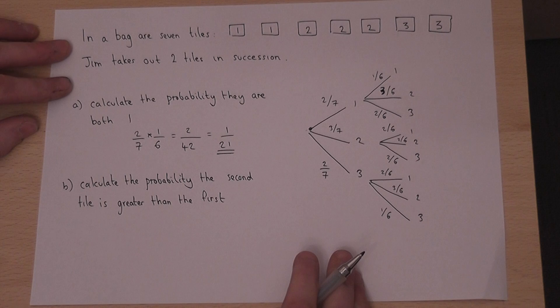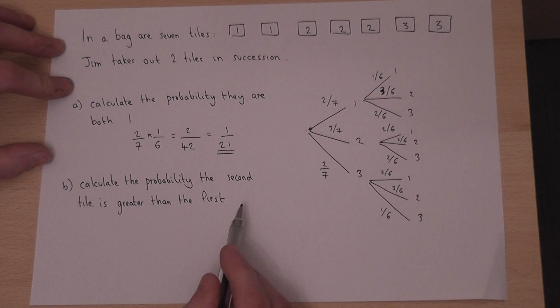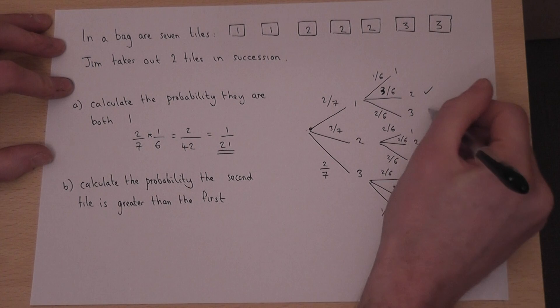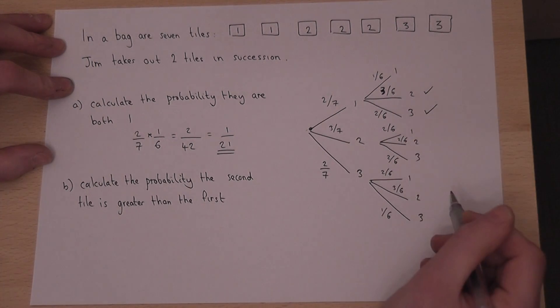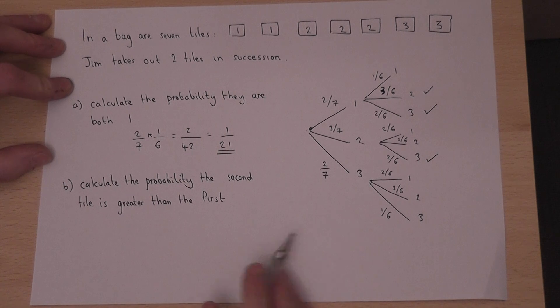Now in part B, the question is what's the chance the second tile is greater than the first? Because we've drawn a tree diagram, we just take all the options which satisfy this condition. Well, two is bigger than one, three is bigger than one, three is bigger than two. So there's three options.